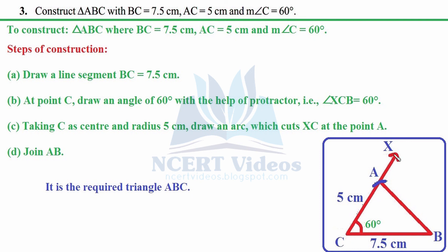These two steps are done. Now taking C as center with radius 5 cm — adjust your compasses to 5 cm using a ruler, not directly — place the needle at C and wherever it intersects the 60-degree ray marks AC equals 5 cm. Then join AB to complete the triangle. Note: the arc will intersect the ray, not extend beyond it.